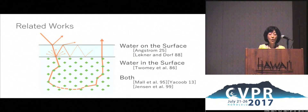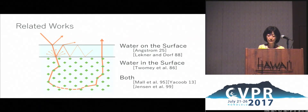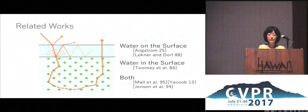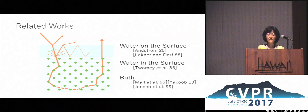Jensen et al. combined these two — in and on the water models — to render wet surfaces. These models, however, are all fundamentally monochromatic and cannot explain the interesting spectral sharpening found in wet surfaces.